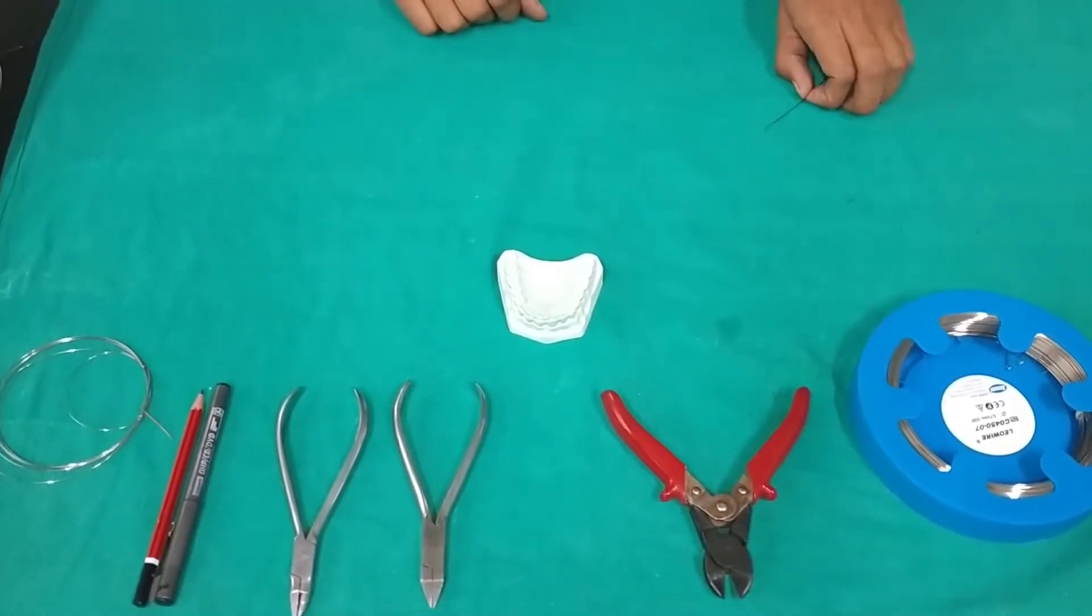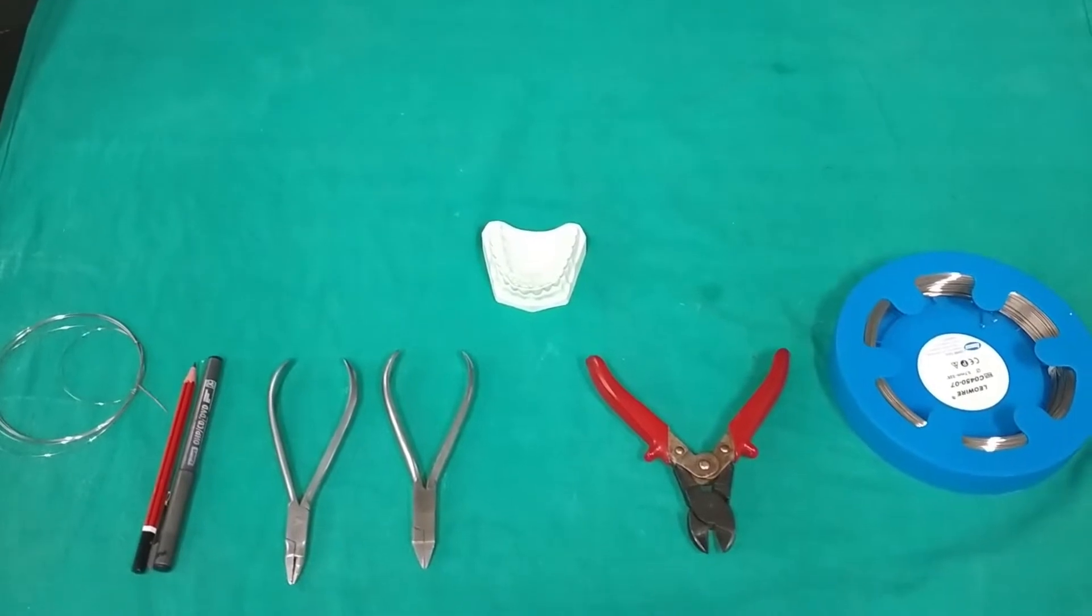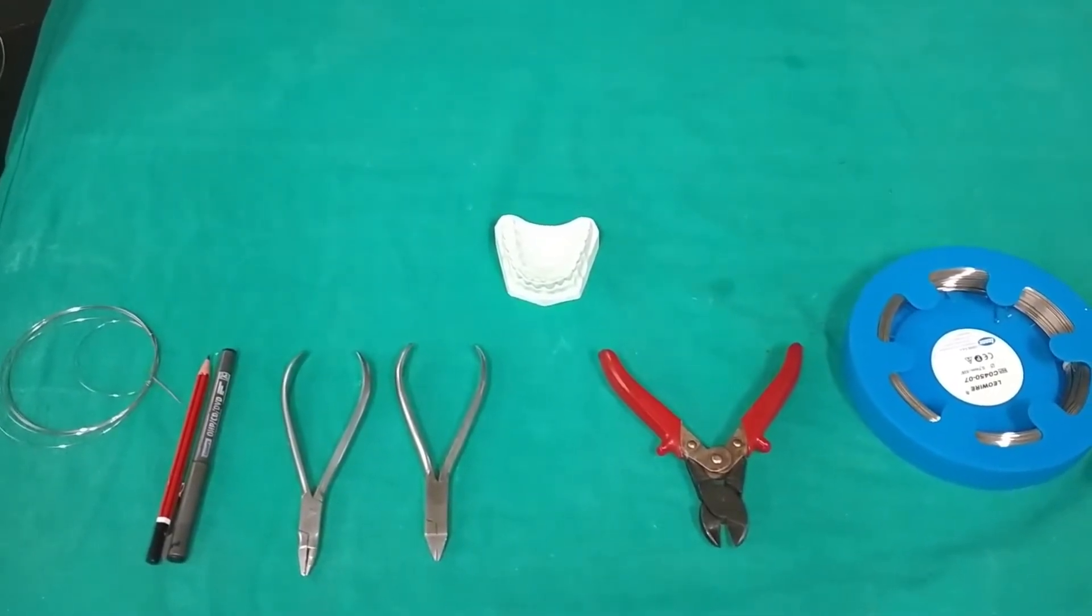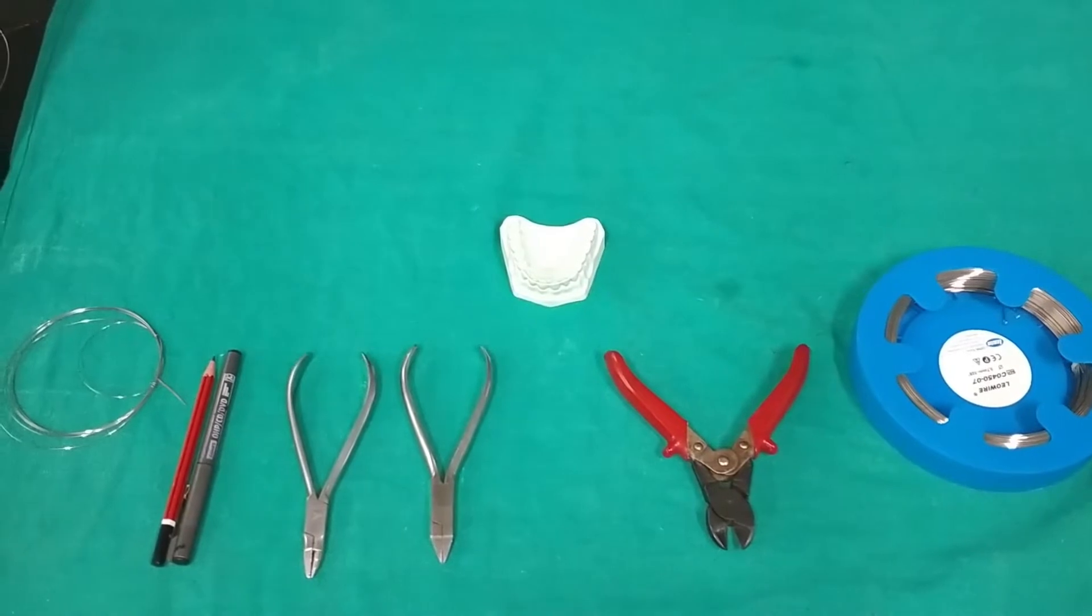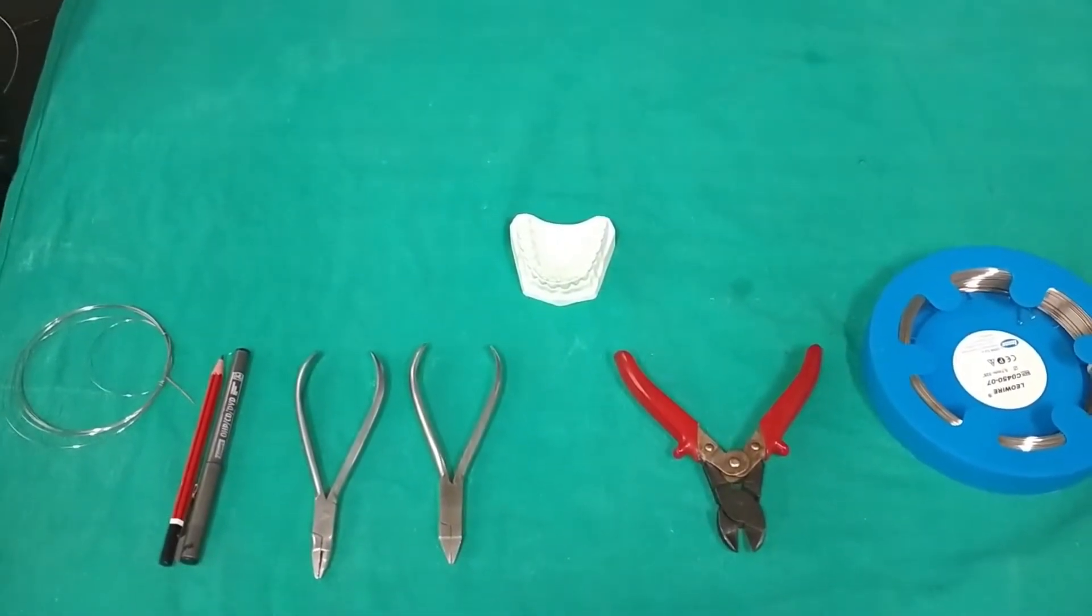Adams clasp was devised by Professor Phillips Adams in 1948. It is one of the most effective clasps, also known as Modified Arrowhead Universal or Liverpool clasp.